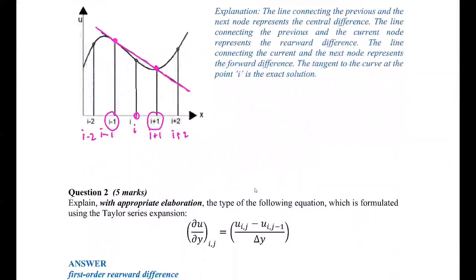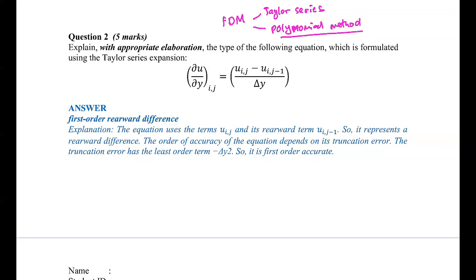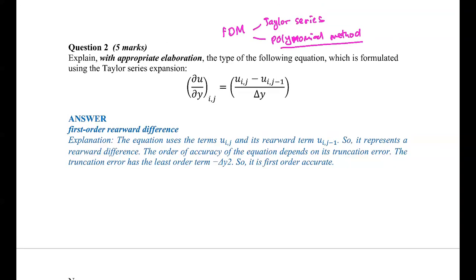For the next question, you were given an equation and required to explain with appropriate elaboration the type of equation given, formulated by using this expansion. To recap for FDM, apart from the Taylor series expansion, we can also use a polynomial method. Even though we did not cover the polynomial method in our syllabus, just to highlight that it exists as an alternative.